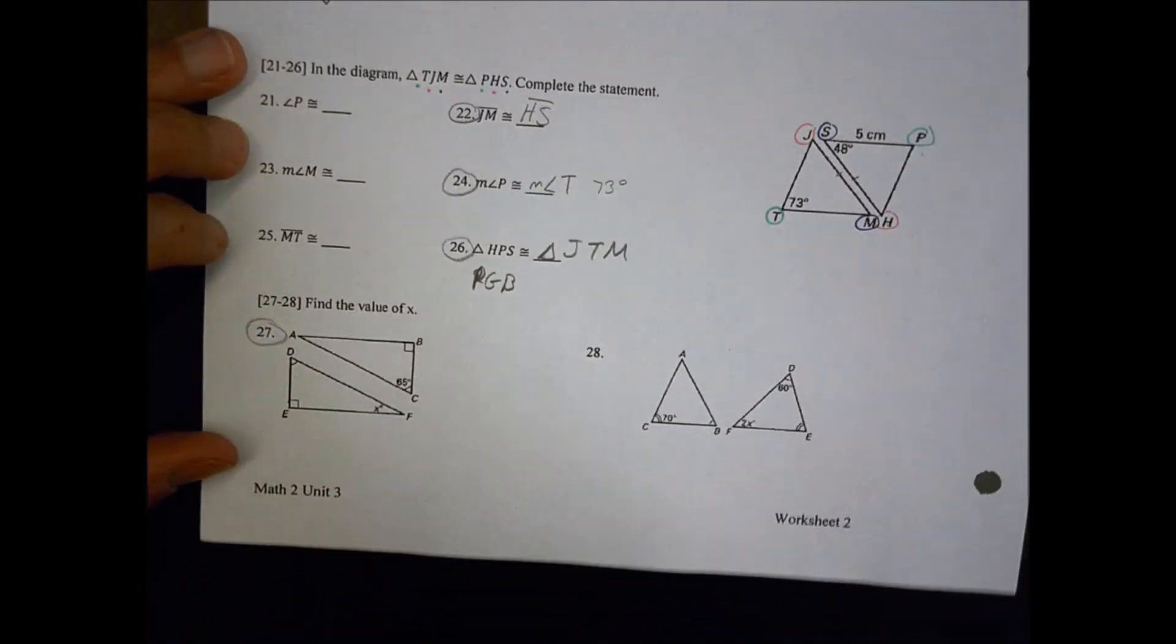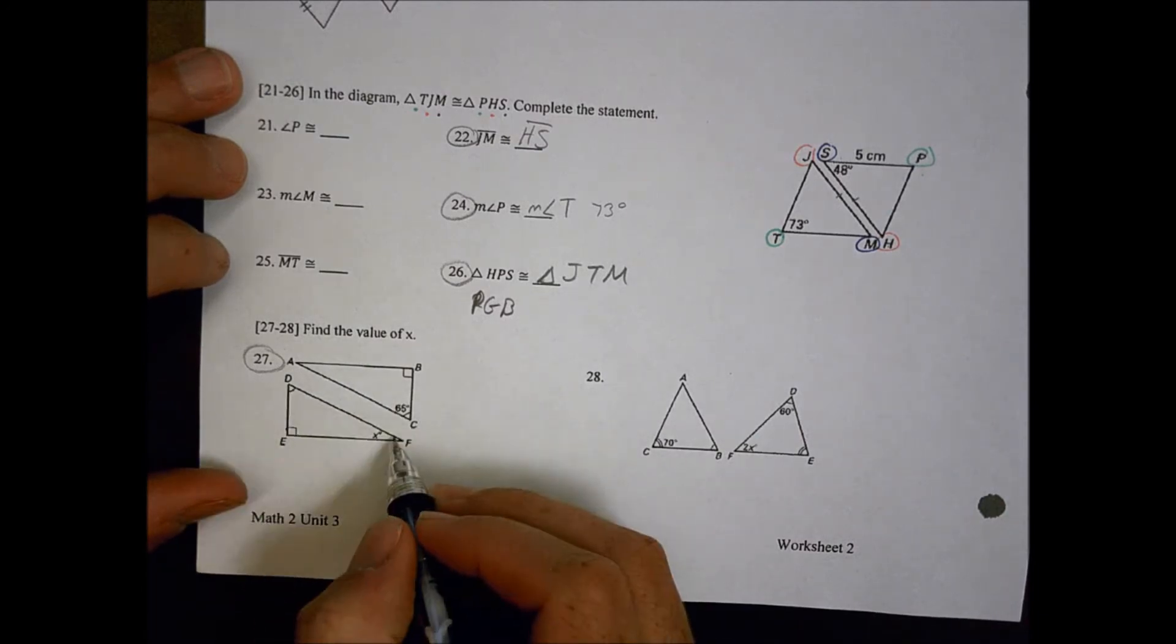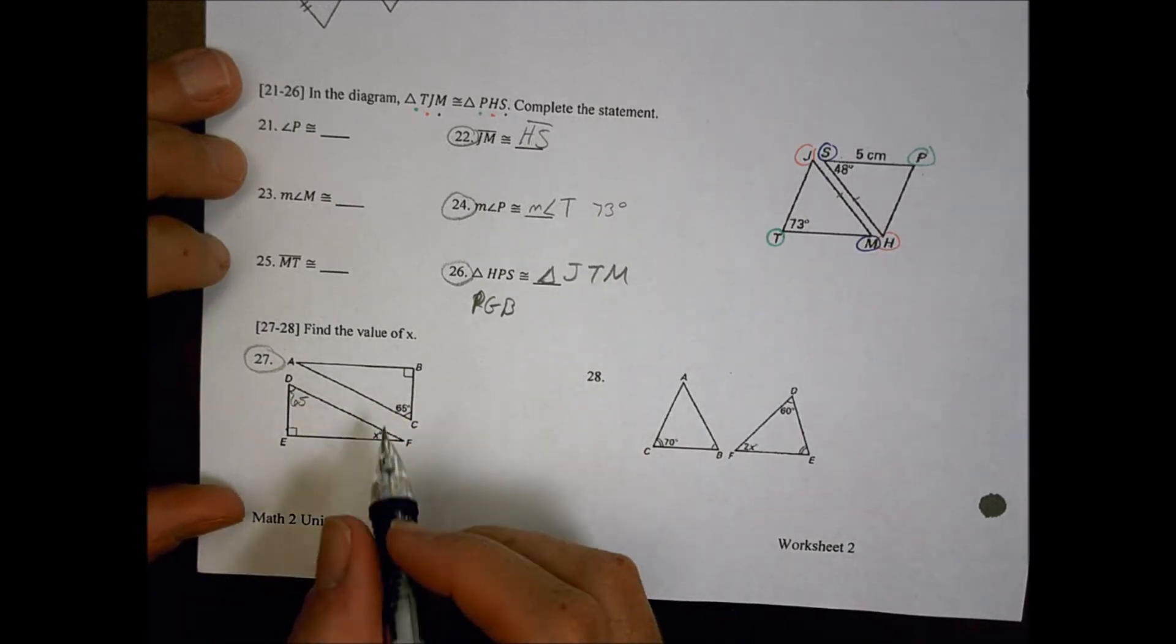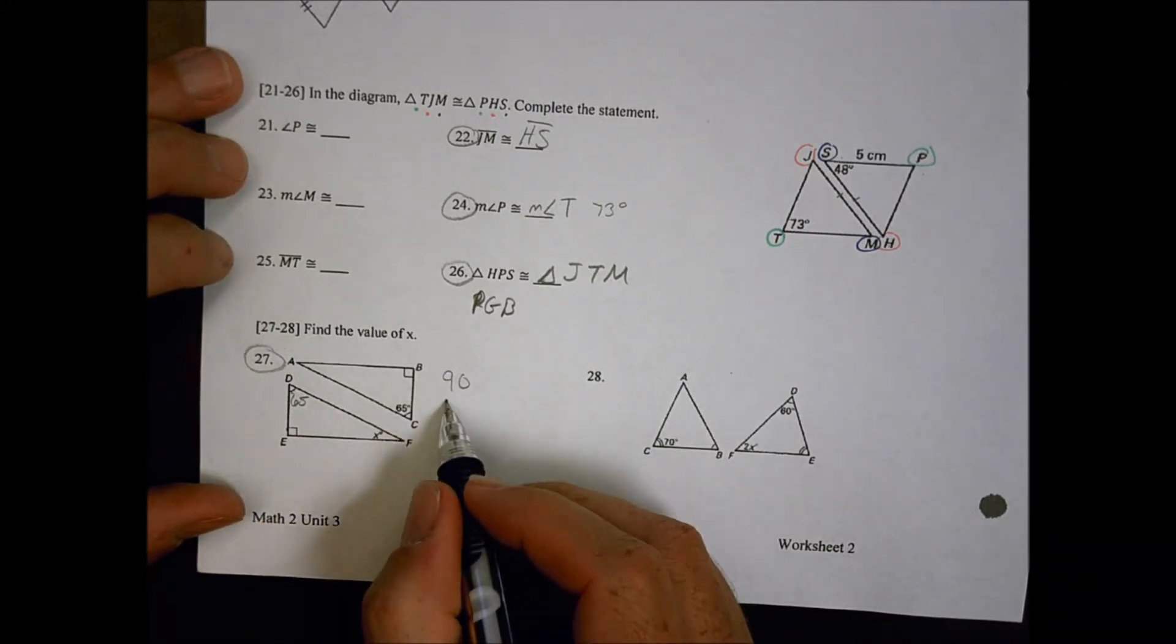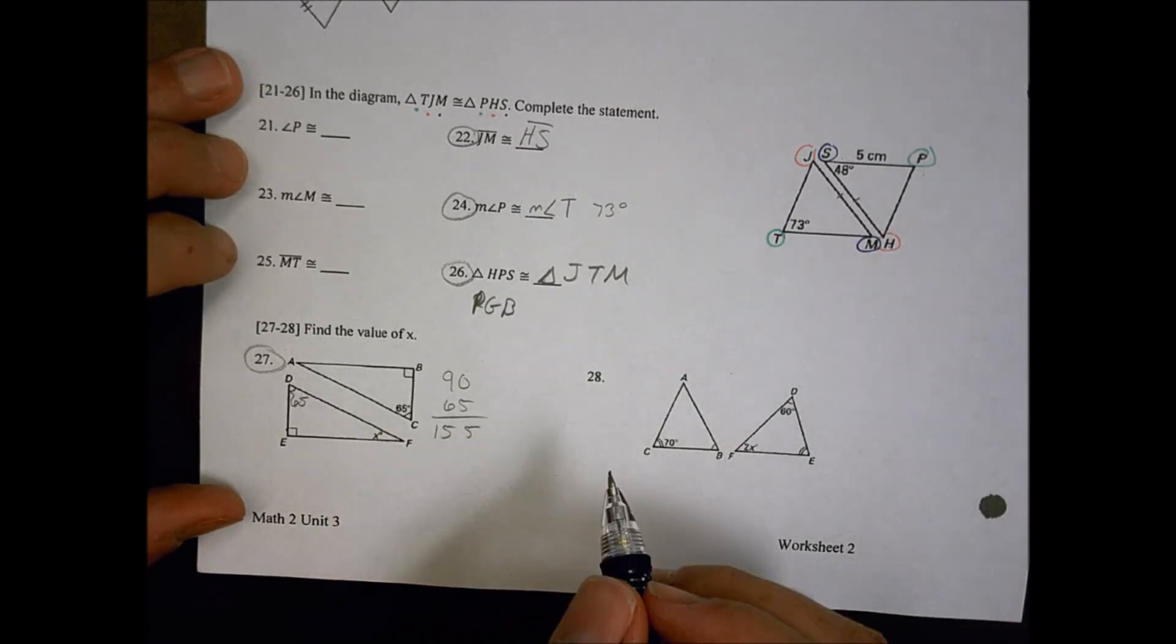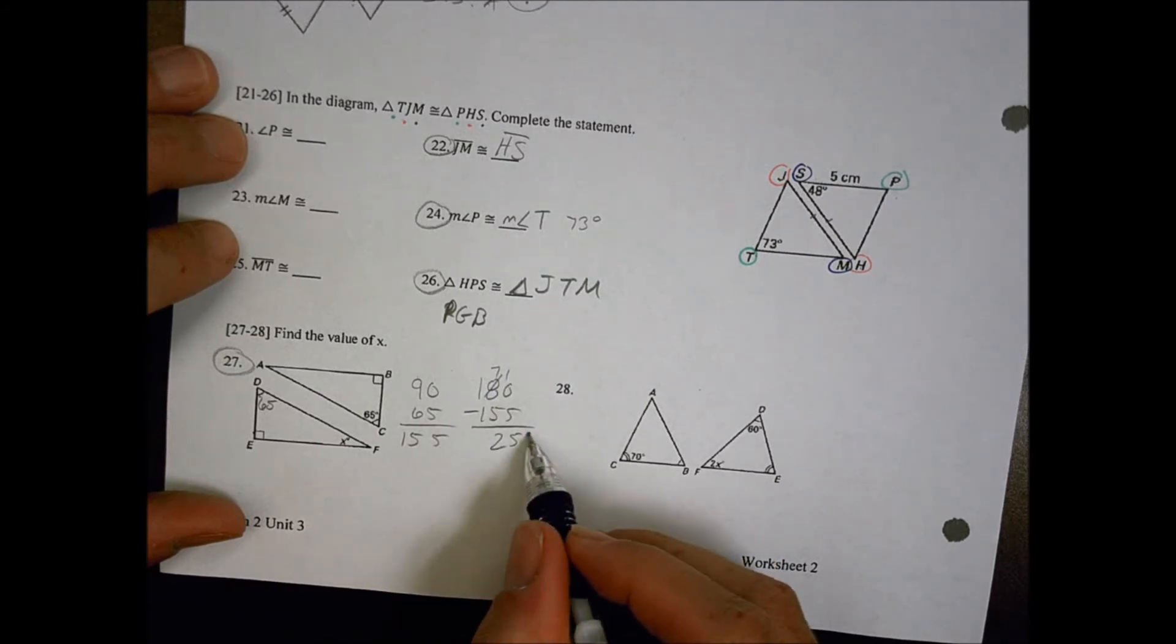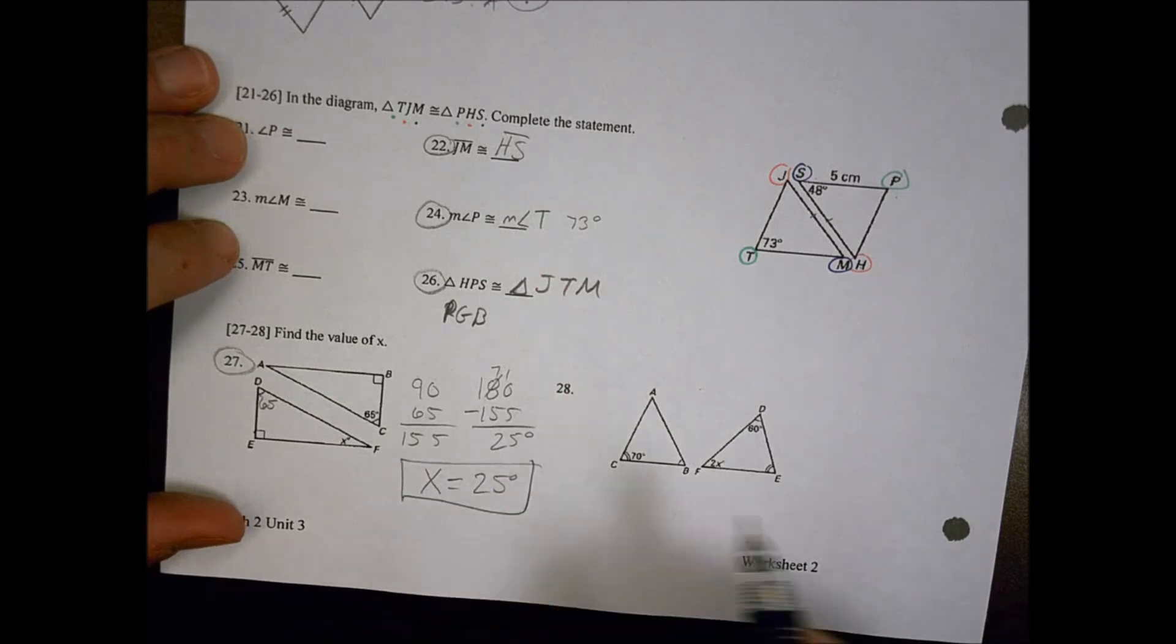And finally, number 27, find the value of X. We see that I have angles are the same here to here. And that makes this value 65 degrees. Okay, a couple steps here. I have a 65 and 90. I don't know that one. So let me add that up. So far I've used up, 9 plus 6 is 15, 155 degrees. So what's left in a triangle? Well, I have 180 total, minus 155 is going to give me 25 degrees is what's left. So X is going to equal 25 degrees for number 27.